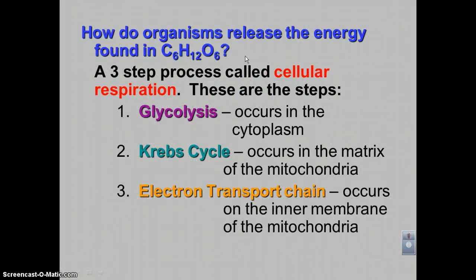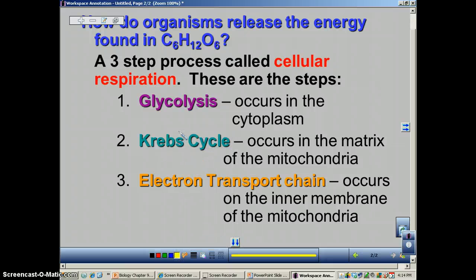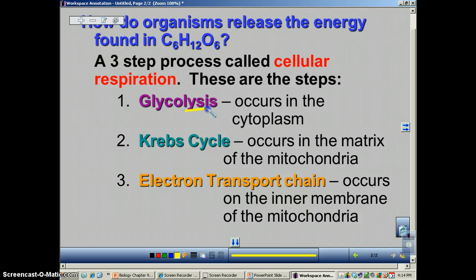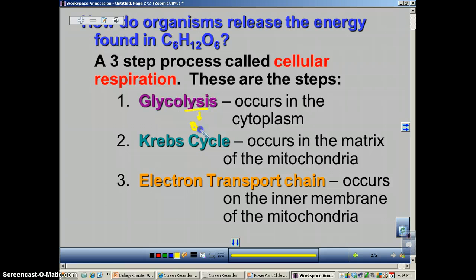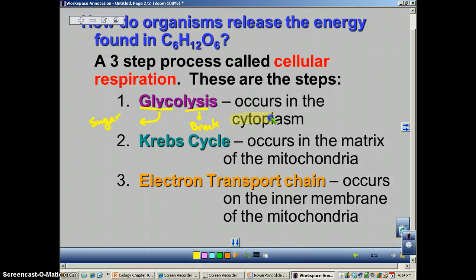How do we release the energy in glucose? Remember the formula for glucose is C6H12O6. It's done in a three-step process called cellular respiration. The three steps are glycolysis—the word lysis means to break and glyco basically refers to sugar—so when you're doing glycolysis, you're basically breaking sugar in half. We're going to go over the details on that in the second podcast. I want you to remember that glycolysis occurs in the cytoplasm. The next two steps are going to occur in the mitochondria.